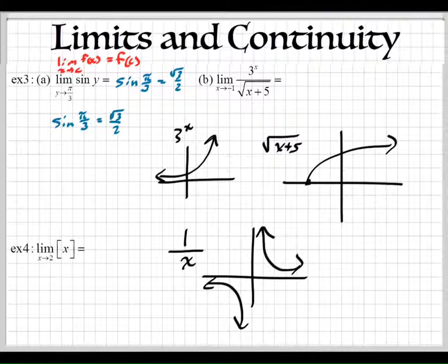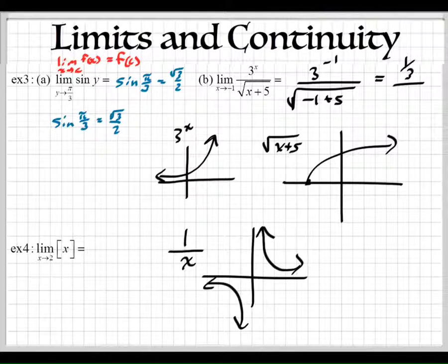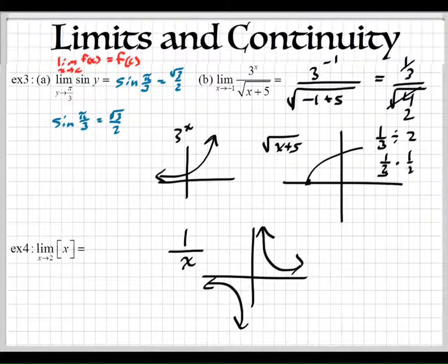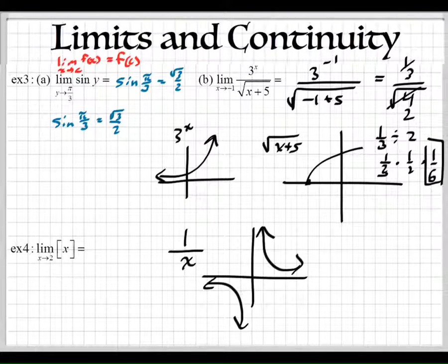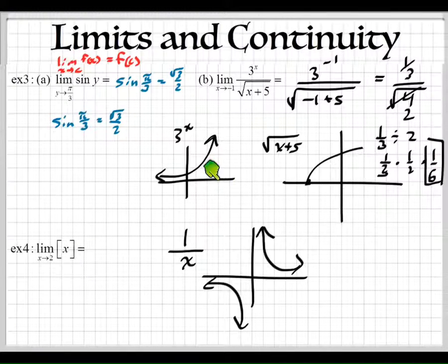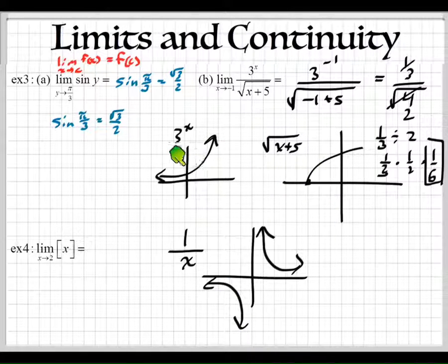So I'm going to plug it in: 3 to the negative 1 on top, and negative 1 plus 5 on the bottom. We get 1/3 on top, and the square root of 4 on the bottom, which is 2. So we have 1/3 divided by 2, which is the same as multiplying by 1/2, giving us 1/6. That's the limit for that one. It looks complicated, but when you break it down using the basic laws of continuity, these are all continuous at negative 1, so we can just plug it in.